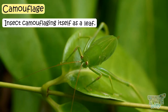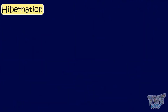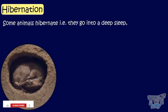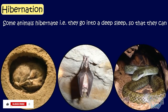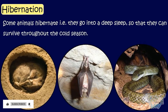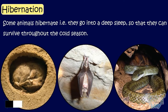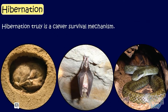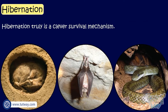Now let's learn another type of adaptation in animals — it is hibernation. Some animals hibernate, that is, go into deep sleep, so they can survive throughout the cold season, when the weather is freezing and the food is scarce. Hibernation truly is a clever survival mechanism. Now let's see some animals that can hibernate.